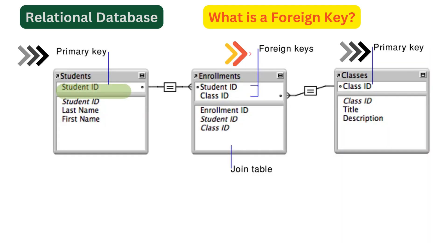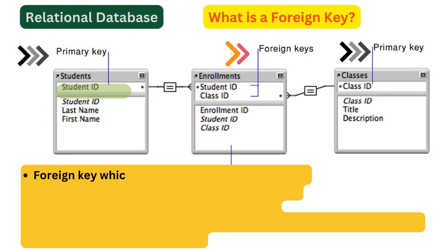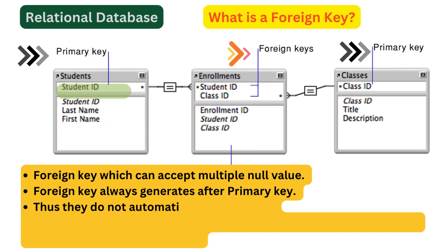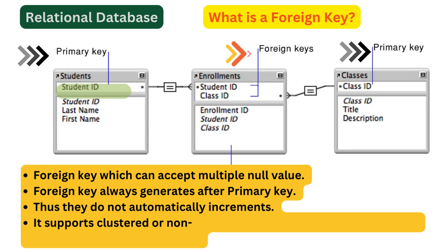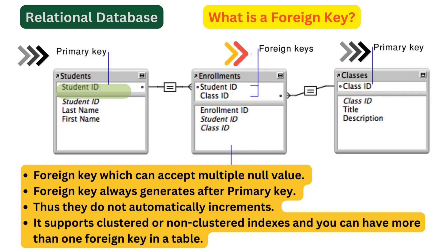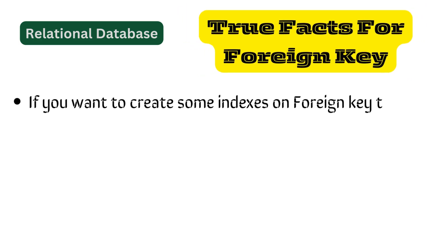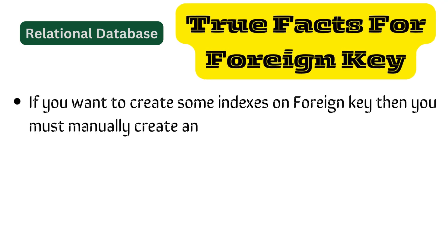A foreign key is just a referential constraint between two tables. If a primary key is used in another table, it would be known in that other table as a foreign key, which can accept multiple null values. A foreign key is always generated after the primary key, and thus it does not automatically increment. It supports clustered or non-clustered indexes, and you can have more than one foreign key in a table. If you want to create indexes on foreign keys, you must manually create an index on them.